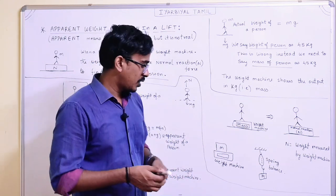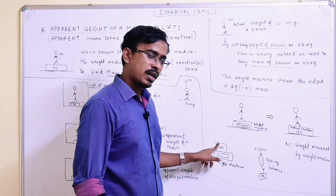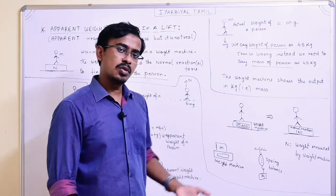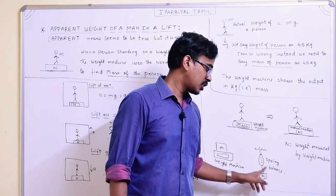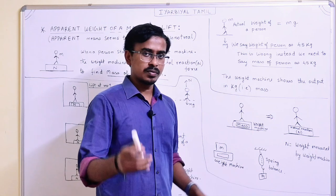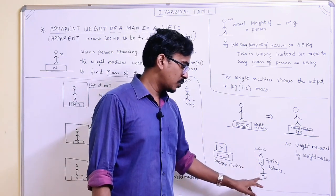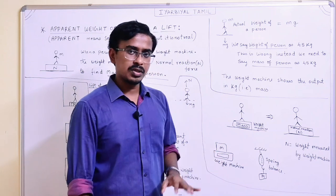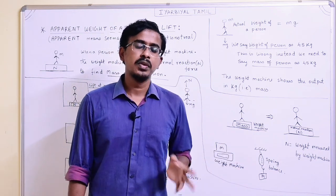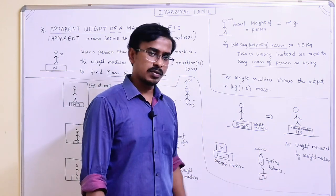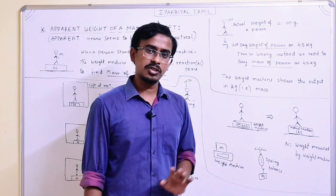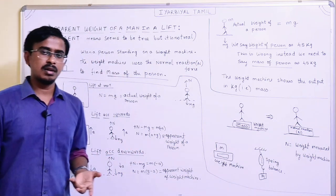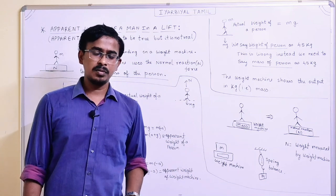So with a weight machine, you can calculate how much mass is measured. A general weight machine shows a mass reading. We can also calculate weight using a spring balance. A spring balance and a normal weight machine have the same function — they both find the mass of the body. The weight machine is essentially a spring balance.